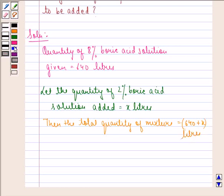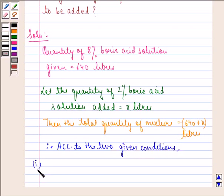Now as the boric acid contents in the mixture should be more than 4% but less than 6%, therefore according to the two given conditions: first, 8% of 640 plus 2% of x is strictly greater than 4% of 640 plus x, and second, 8% of 640 plus 2% of x is strictly less than 6% of 640 plus x.